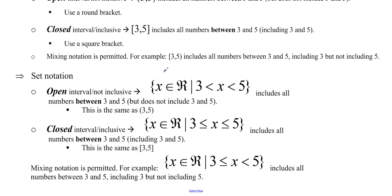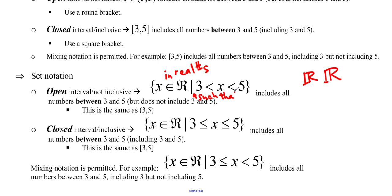Set notation is written as: curly bracket, x in ℝ (that's a C with a line through it, meaning 'element of'), such that (a vertical line), followed by the condition. ℝ is a fancy R representing the real numbers — I draw it as a double-bar R. So the open interval example reads: x ∈ ℝ such that 3 less than x less than 5. On the number line, this looks like open circles at 3 and 5 with the middle filled in.